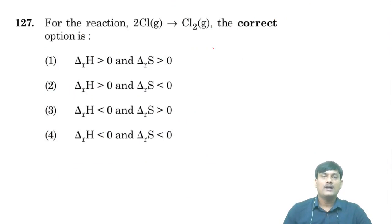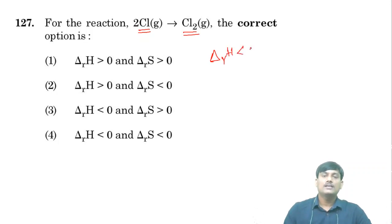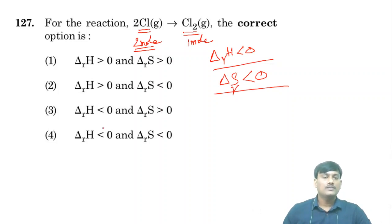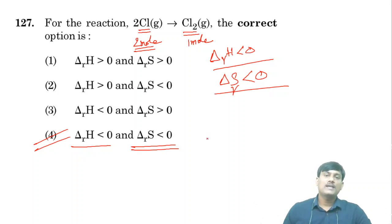For the reaction where atoms combine to form molecules: atoms converting to molecules releases energy, so it is an exothermic reaction with ΔH < 0. On the left side there are 2 moles of gaseous atoms; on the right, 1 mole of gaseous molecules. The decrease in number of gaseous species means a decrease in entropy (ΔS < 0). The fourth option — exothermic with decrease in entropy — is the correct answer.